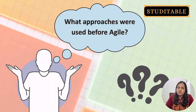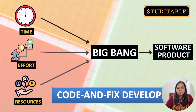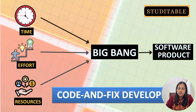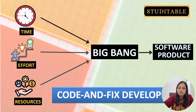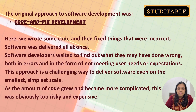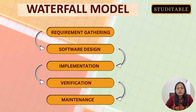What were the approaches used before Agile? Agile was introduced around 2000 and 2002. The original approach was code-and-fix development, also called the Big Bang, around the 1950s, where the entire project was created all at once — involving a lot of time, effort, and resources. Then the waterfall model came in, following the cycle of requirement gathering, software design, implementation, verification, and maintenance.